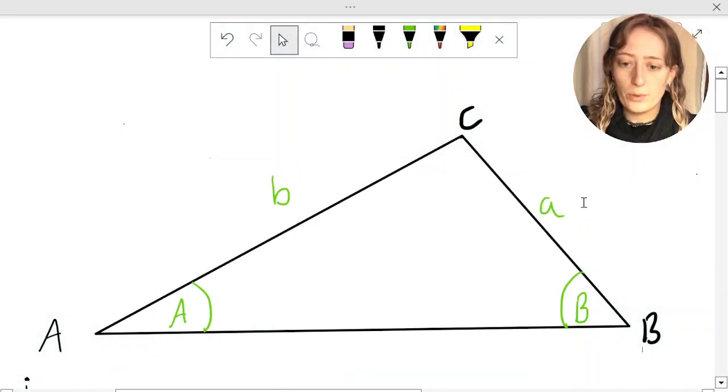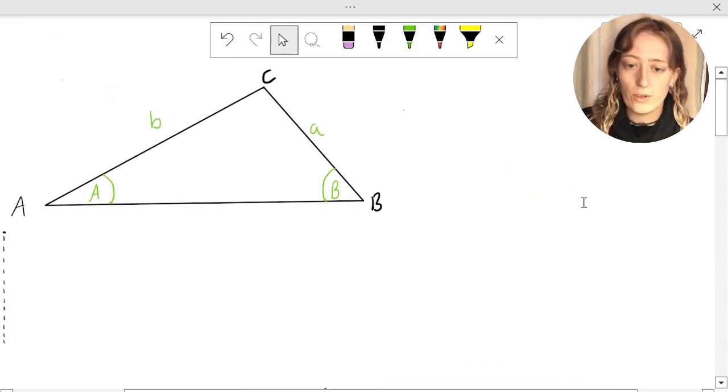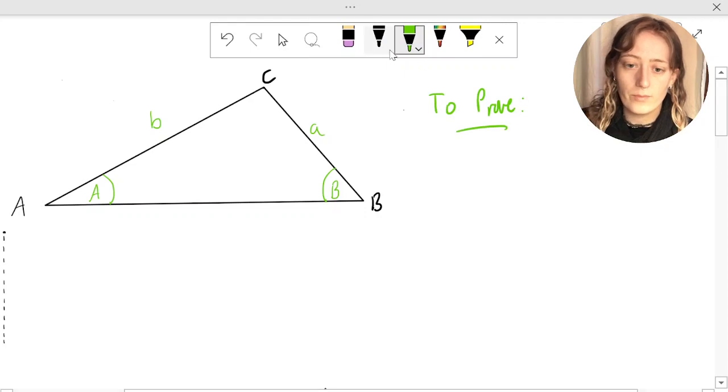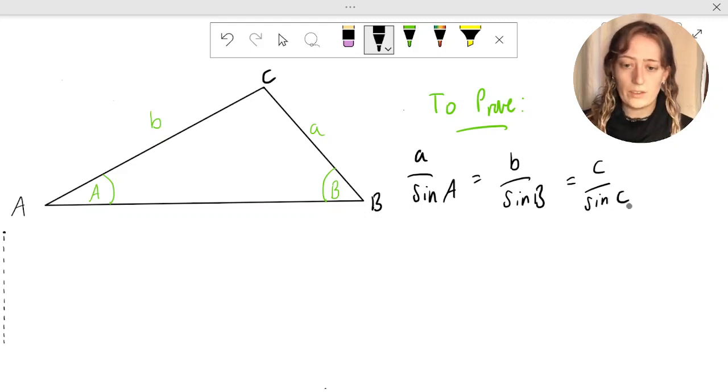We're going to use the following diagram to prove the sine rule. The first thing we do when we're going to prove something is write down what we're actually trying to prove. So first things first, to prove that a over sine a is equal to b over sine b is equal to c over sine c.